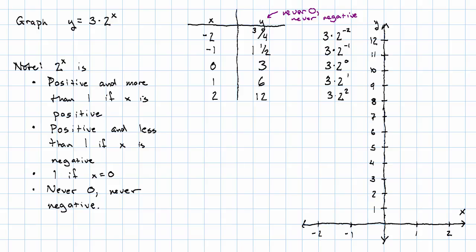So when x is negative 2, y is 3 fourths. That's going to be about here. When x is negative 1, y is 1 and a half. That's about here. When x is 0, y is 3. When x is 1, y is 6. When x is 2, y is 12.